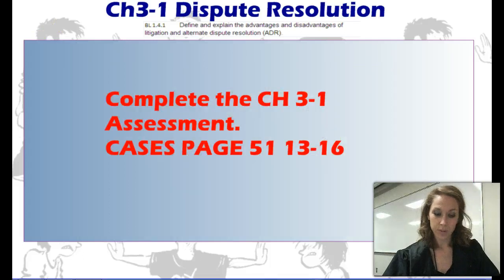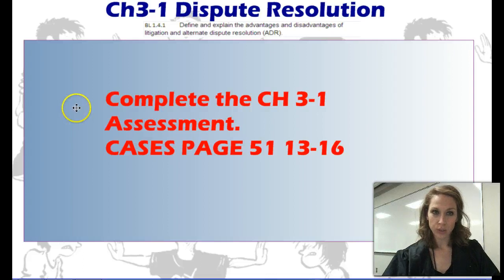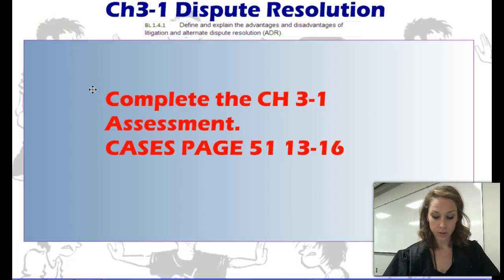I'm now going to ask you questions about what we just learned. What type of jurisdiction does a trial court have? At a trial court, would you hear questions of facts or issues of law? True or false: appellate courts review decisions of lower courts when a party claims an error was made during the lower court's proceeding.